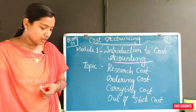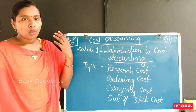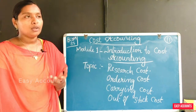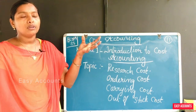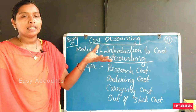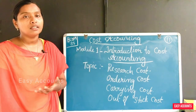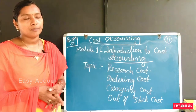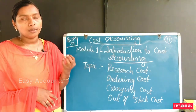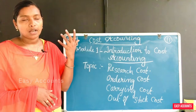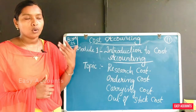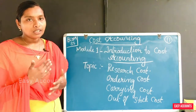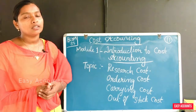It includes the cost of getting an item into the firm's inventory. The ordering cost covers materials and the order itself. That means we are not going to store the cost under ordering cost.